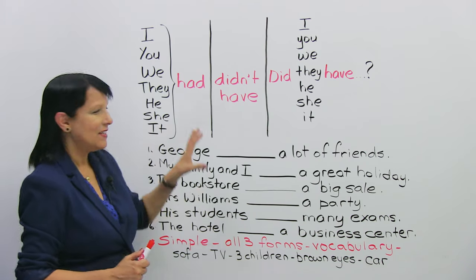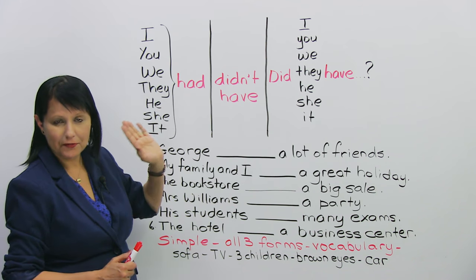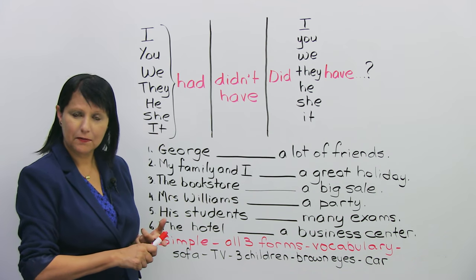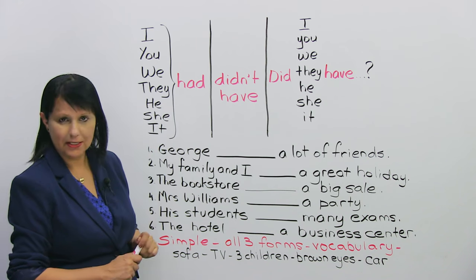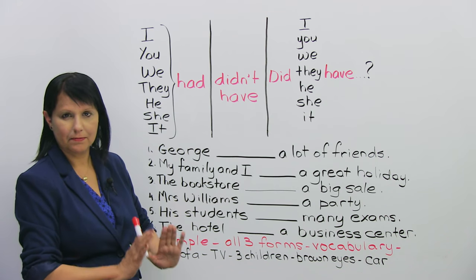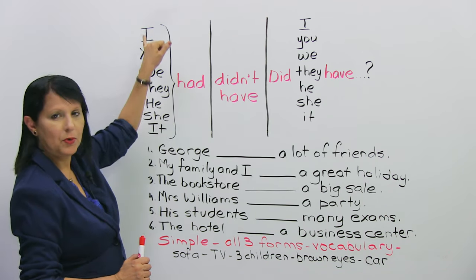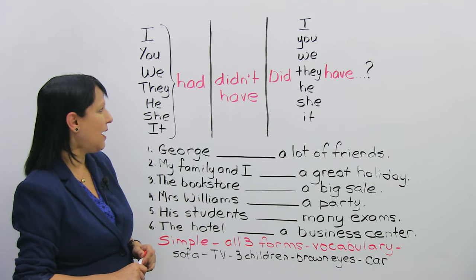Now, so you see how simple it is? What you have to learn is that the verb have in a positive sentence becomes had, and we can use had with every subject. Alright?